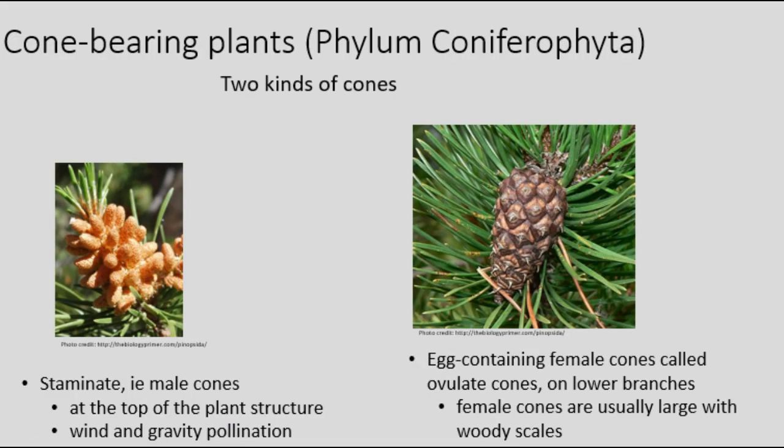Male sperm are vastly more numerous and smaller in size. Staminate, i.e., male cones, are usually at the top of the plant structure. Wind and gravity facilitate the transport of pollen to the egg-containing female cones — called ovulate cones — on the lower branches. Since they contain more massive eggs, female cones are usually large with woody scales to protect the embryo. You may not have noticed the staminate cones before because they are not usually at eye level; the cone you are familiar with is likely the ovulate cone.